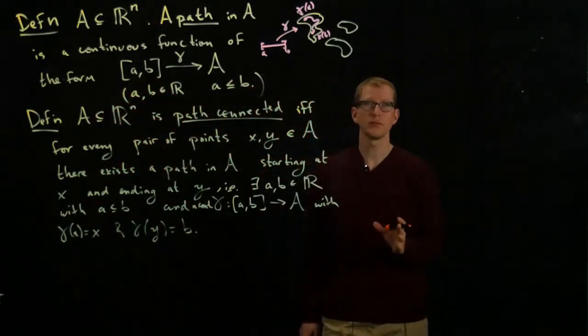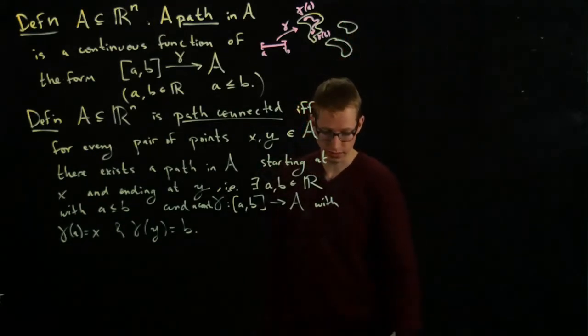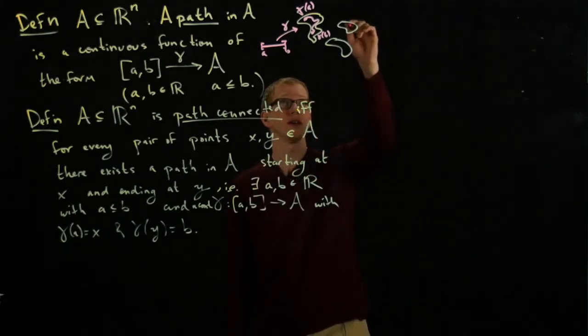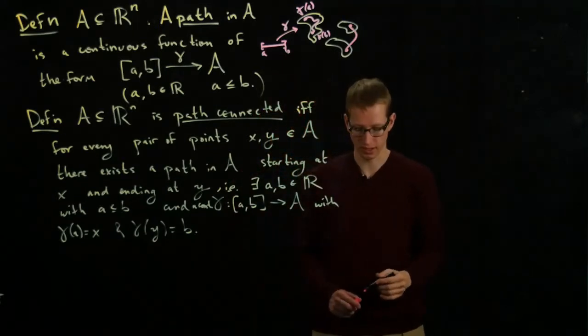This is what it means for a subset to be path connected. So in this picture above, intuitively, such a thing would not be path connected because I wouldn't be able to continuously draw a path from here to here without leaving the space that I'm looking at.